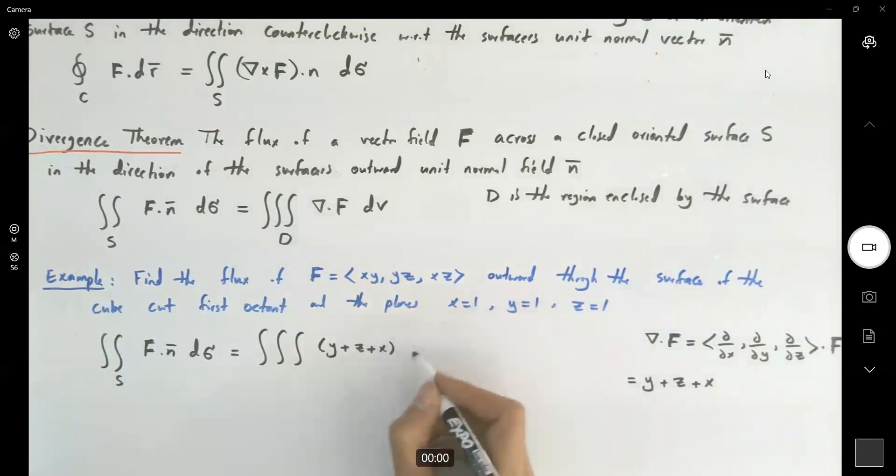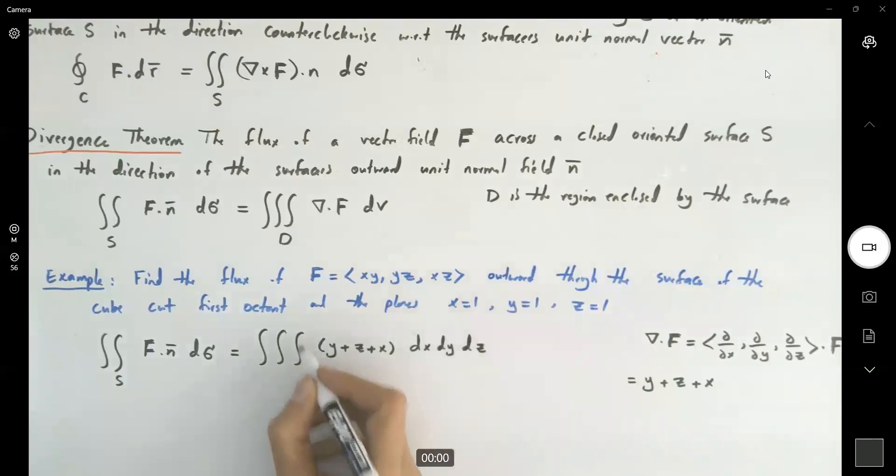As you can see, we have fixed boundaries. So you can write it as dx, dy, dz, or any order that you like. Just using a very simple triple integral here.